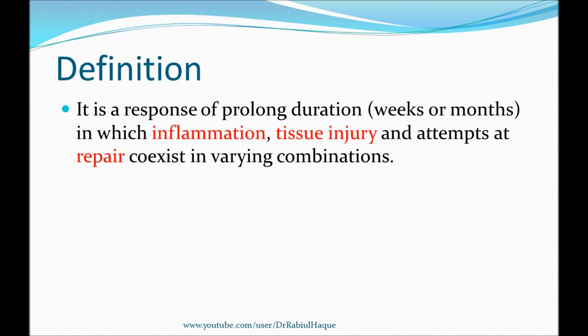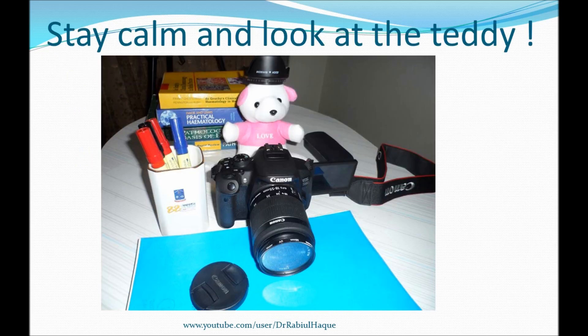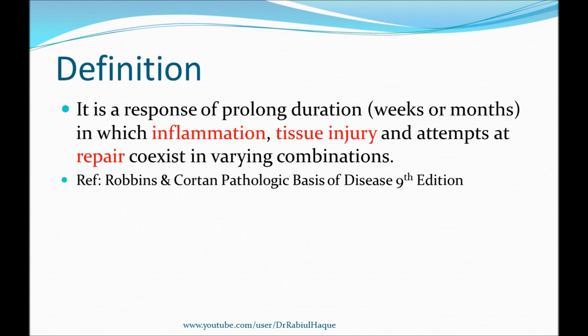I hope you're still with me and didn't run away just like my students do when I try to teach them definitions of pathology. Don't run away because I will explain this definition line by line now. In the first line: this is a response of prolonged duration. Notice from my previous videos on acute inflammation that acute inflammation was of short duration and rapid in onset. On the contrary, chronic inflammation is of prolonged duration — usually for weeks or months.